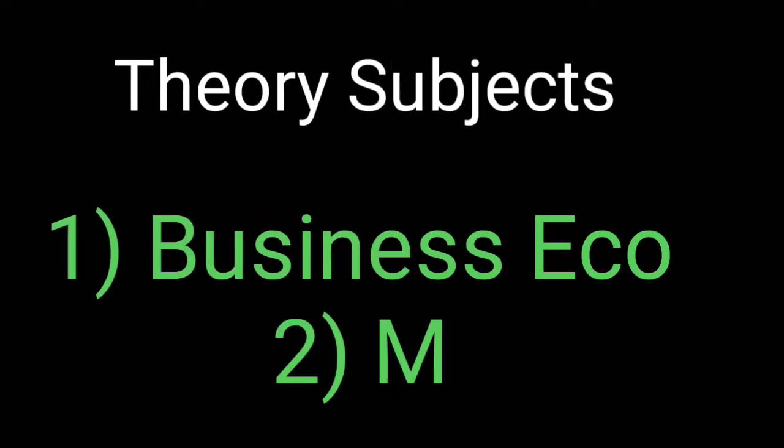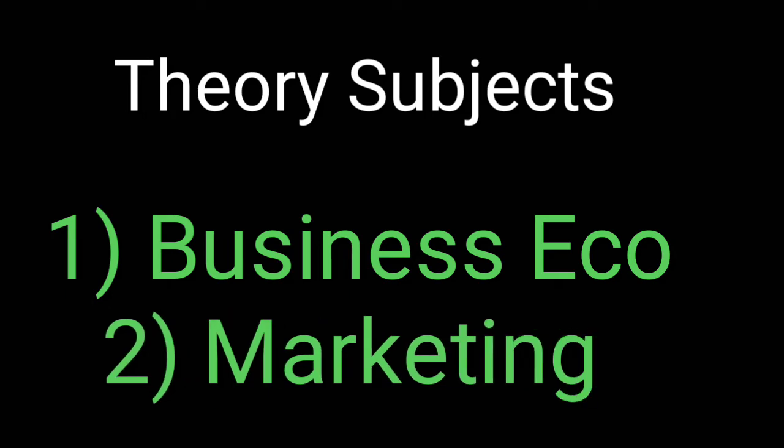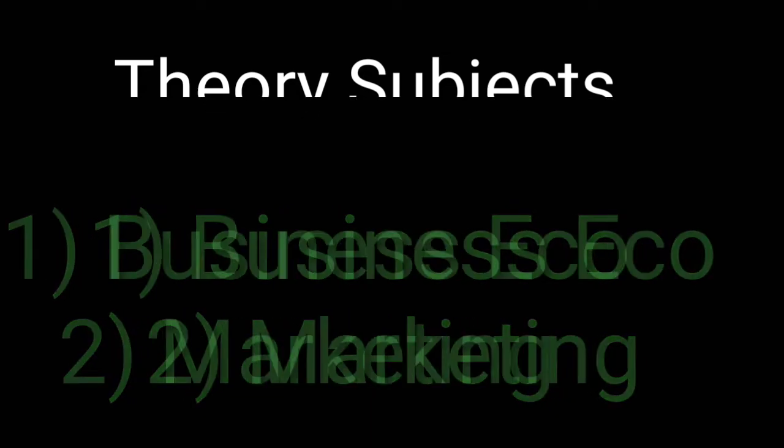First, two theory subjects are introduced in all colleges in Semester 5: number one is Business Economics, and number two is Marketing. These two subjects play a very important role, so you have to give a lot of attention to them. Business Economics and Marketing are purely theory subjects, so there will be a 100-marks theory paper on each — you need to focus more on these to increase your percentage.